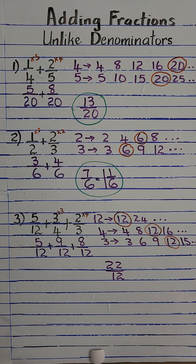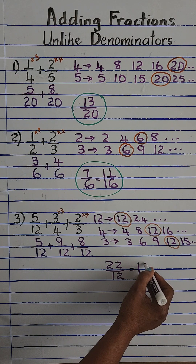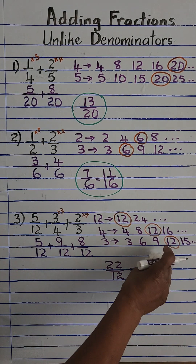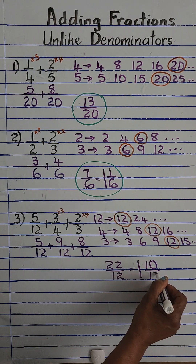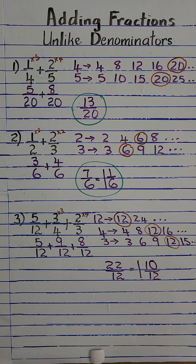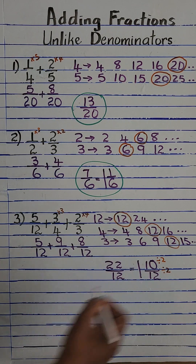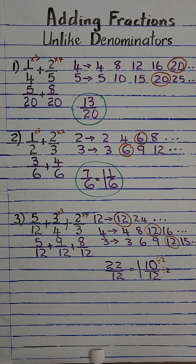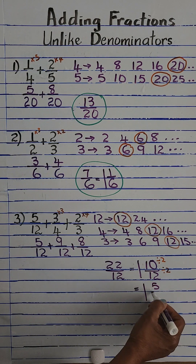We're going to convert 22 over 12 to a mixed number, which gives us 1 and 10 over 12. We notice that 10 over 12 can be reduced to a lower term, so we divide both the numerator and denominator by 2, and that gives us 1 and 5 over 6.